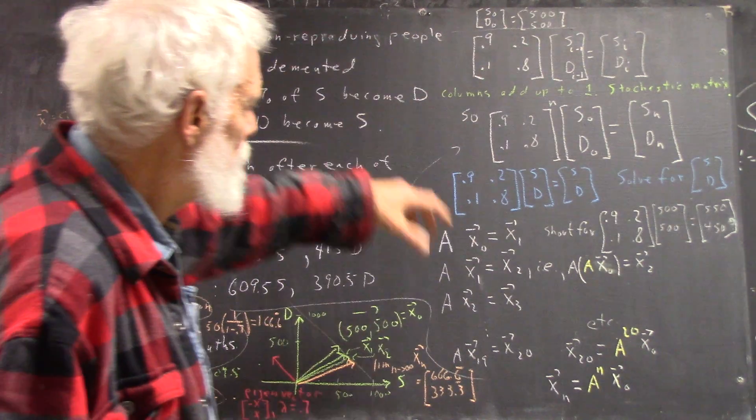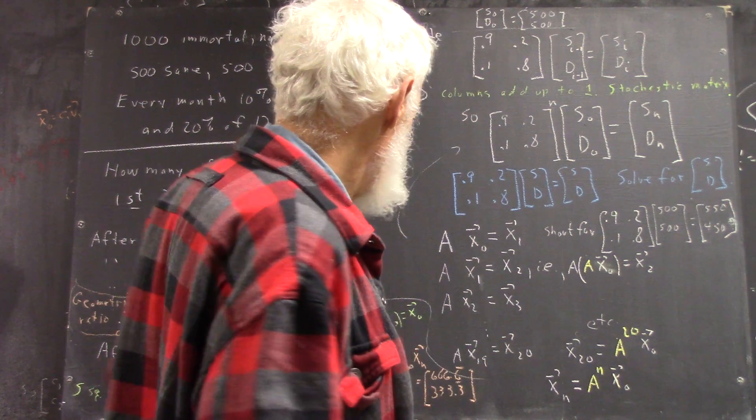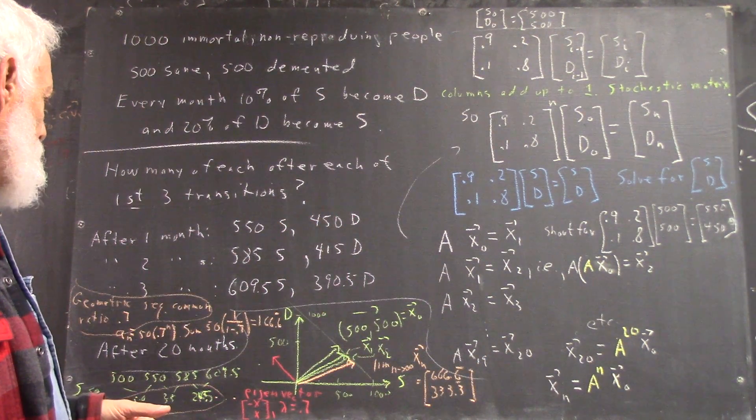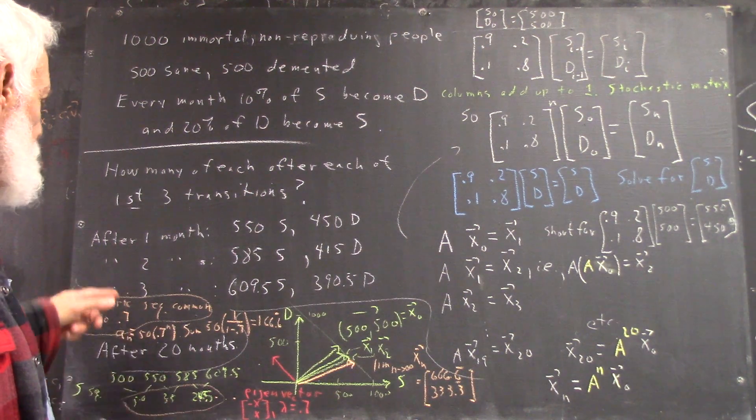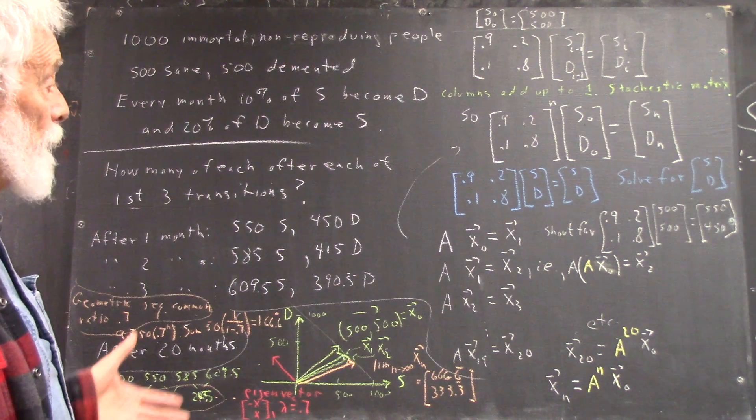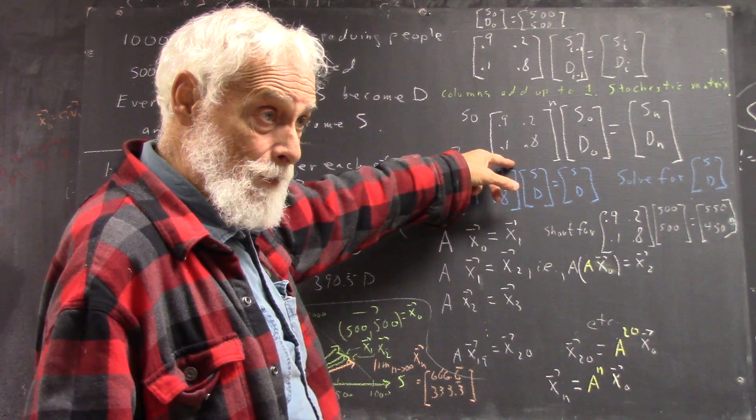And we saw how you can raise this thing to powers. I think we might have—I don't remember, because we certainly found the eigenvectors, okay? And the eigenvectors in a matrix like this are really easy to find. I think we did it symbolically, okay?